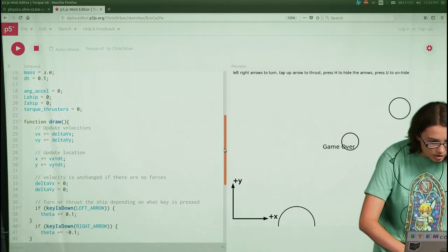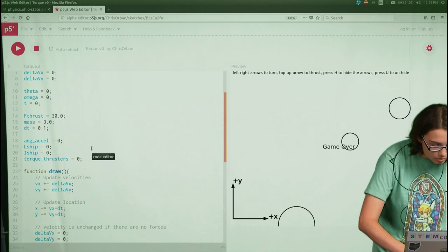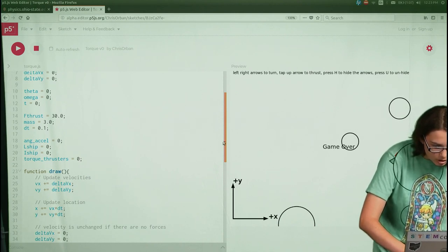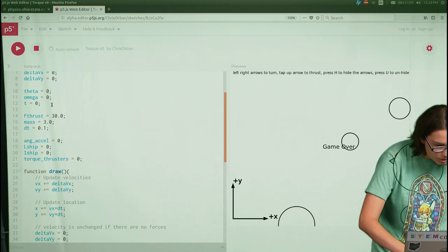Okay, so it looks like we've got angular acceleration is new, L_ship, I_ship, torque, thrusters is new. I think one of these is new.